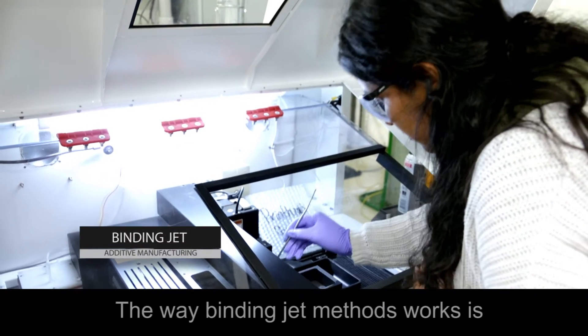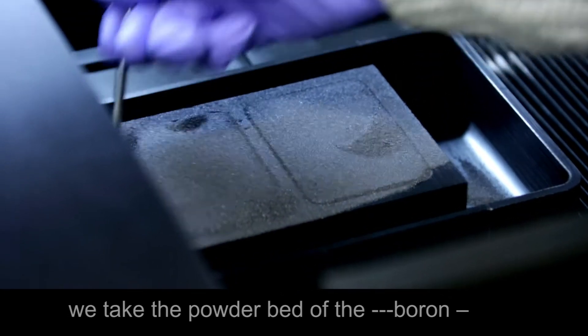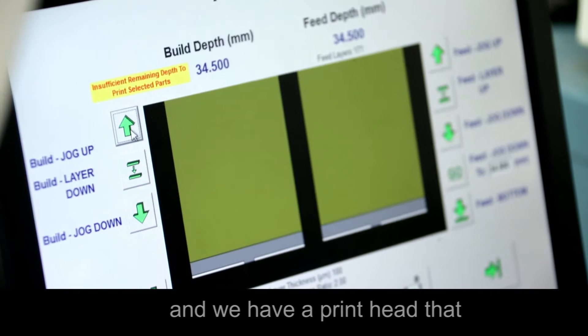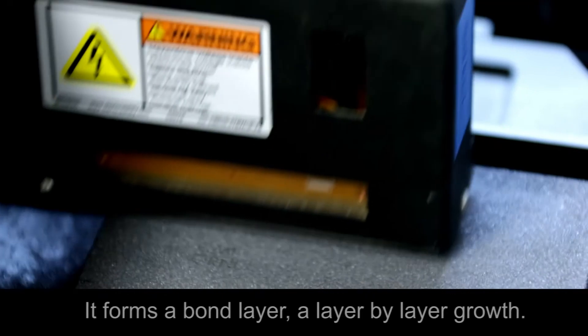The binder jetting method works by taking a powder bed of neodymium iron boron permanent magnet powders. We have a printhead that binds the particles together, forming a bound layer.